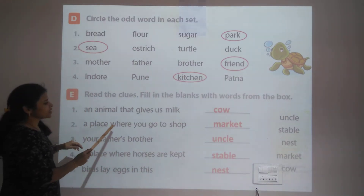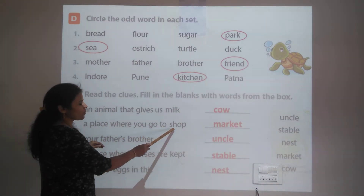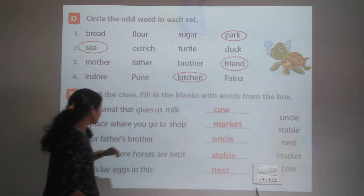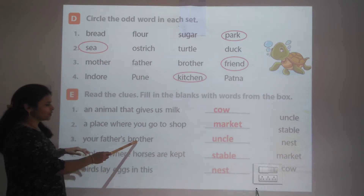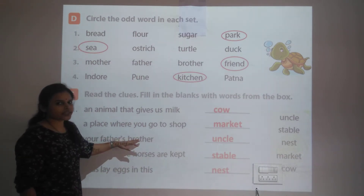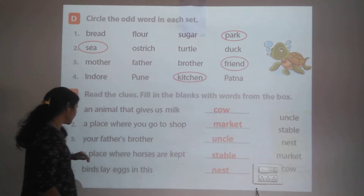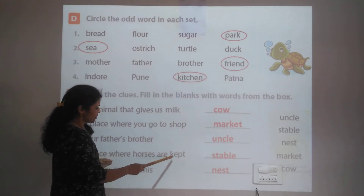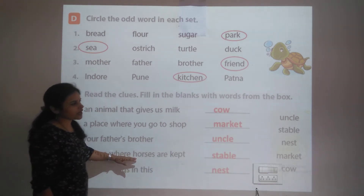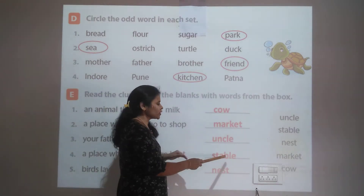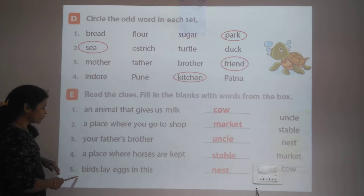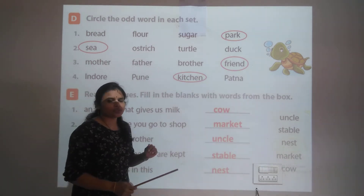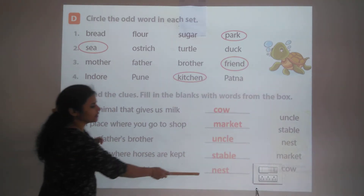Second clue: a place where you go to shop — the answer is market. Third clue: your father's brother — the answer is uncle. Fourth clue: a place where horses are kept — the answer is stable. Fifth clue: birds lay eggs in this — the answer is nest.